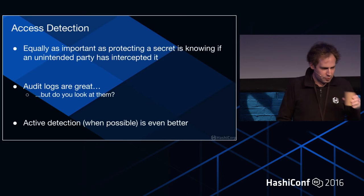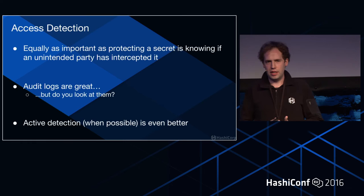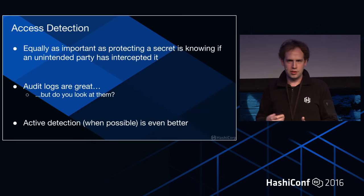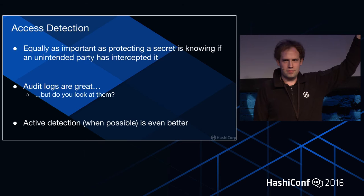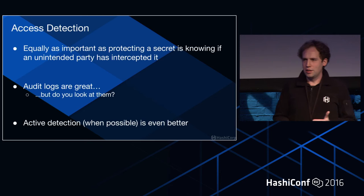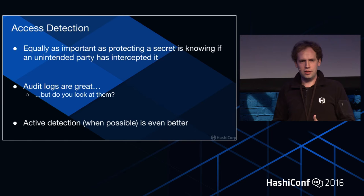Just as important as protecting a secret is knowing if an unintended party has seen it — that's access detection. Audit logs are great; we want audit logs, they're really good for knowing when someone has accessed something. But do you actually look at them? People don't regularly look at audit logs, even though they're very important to have. When you can do active detection of someone accessing a secret they weren't authorized to access, that's much better.